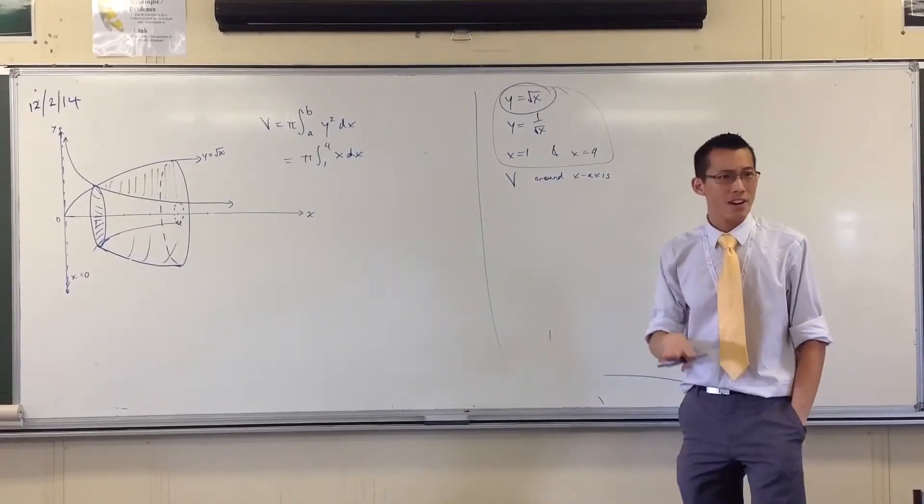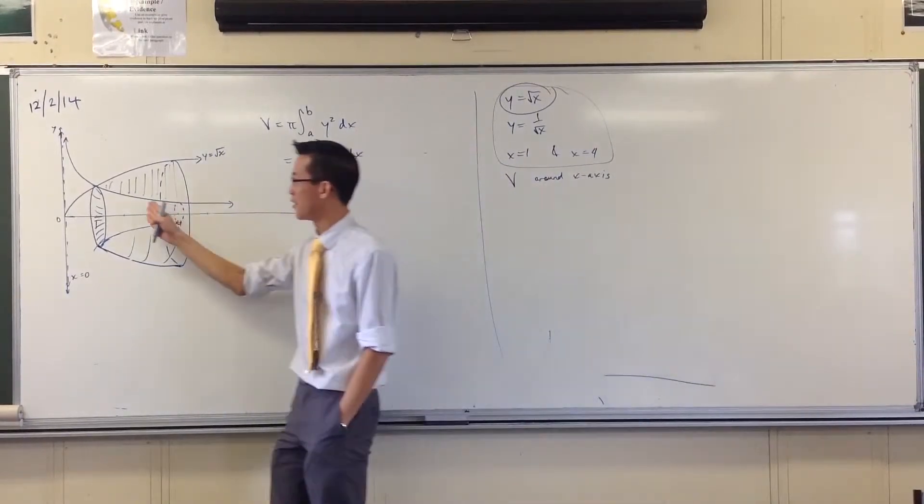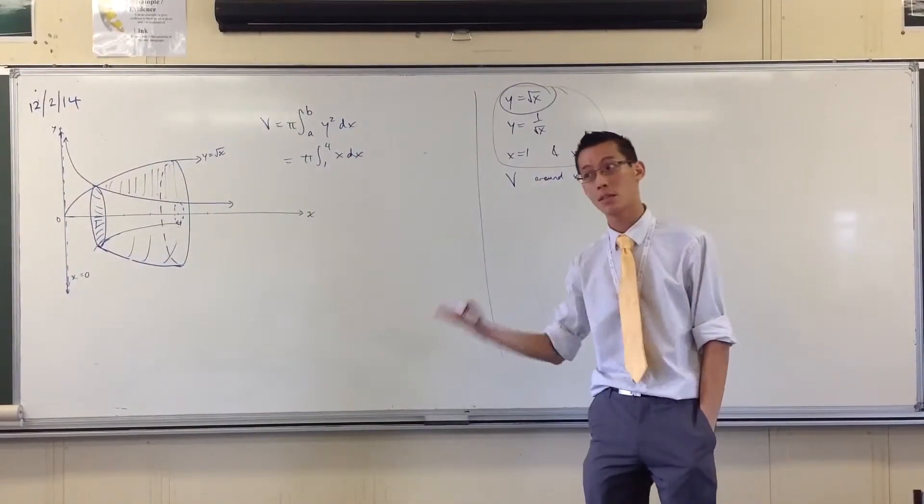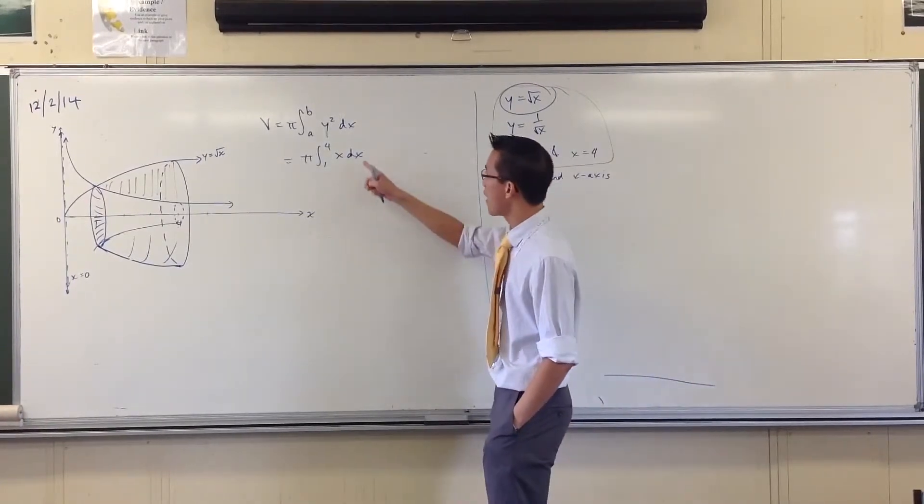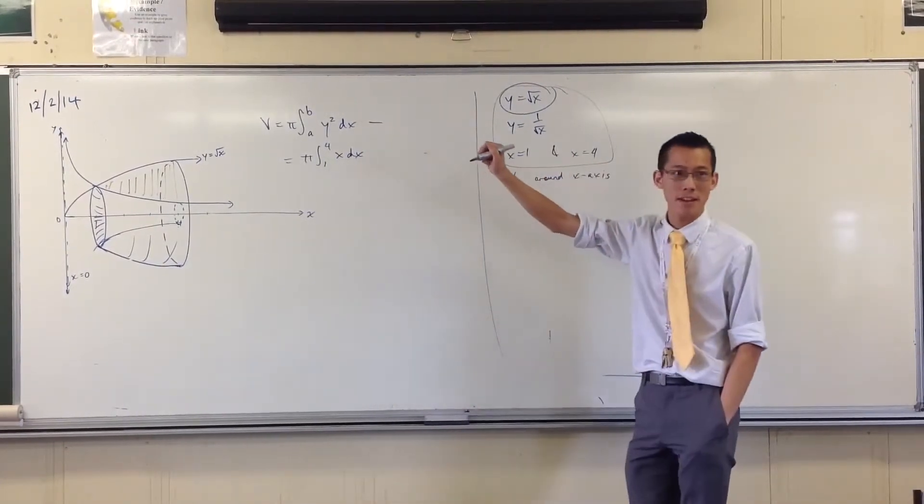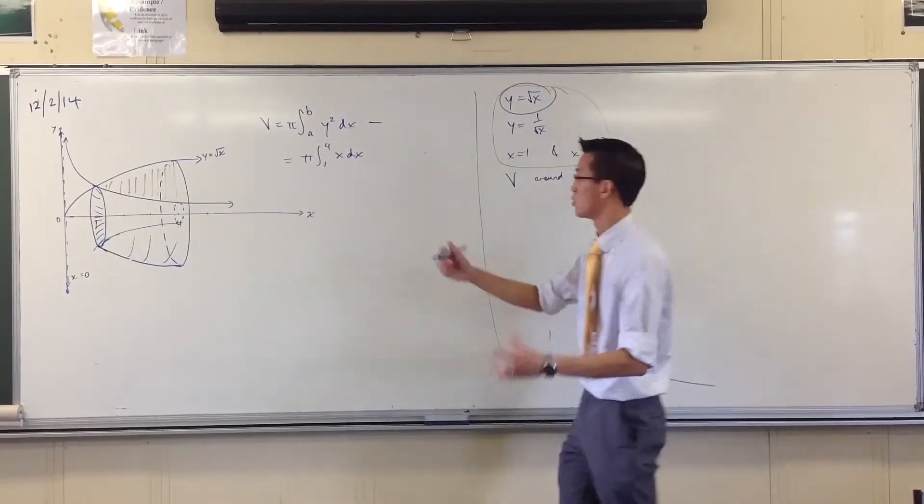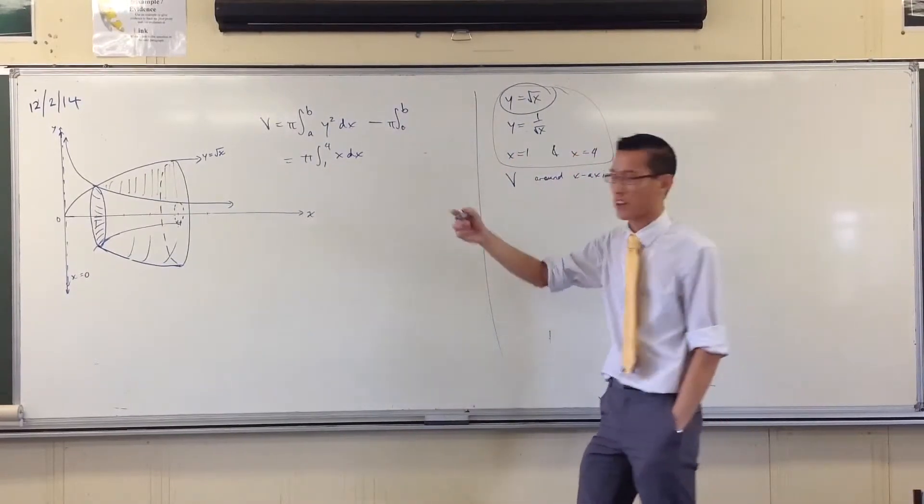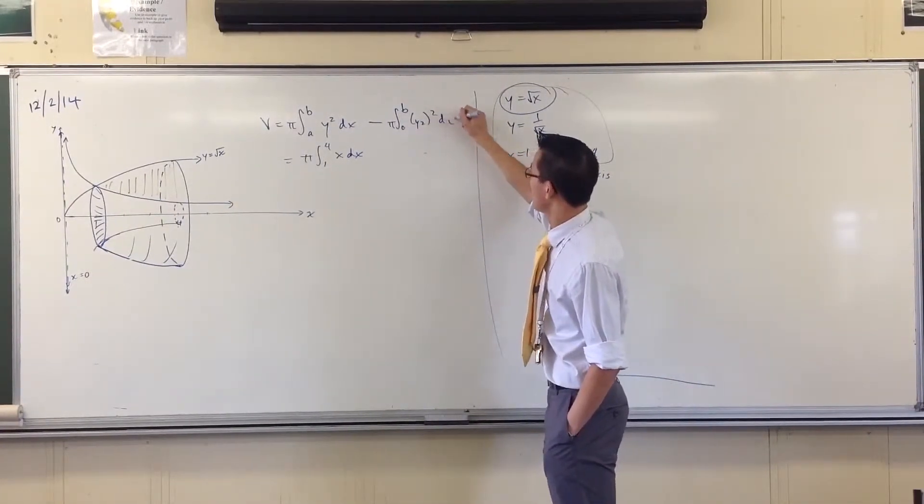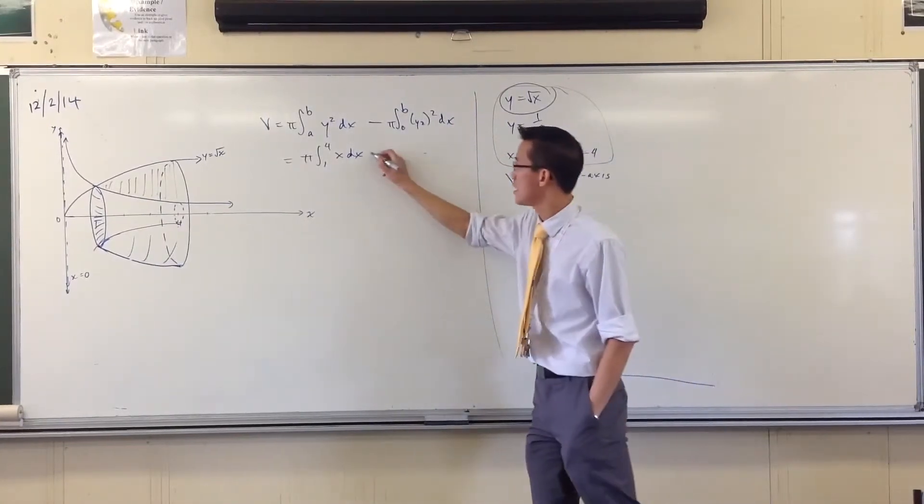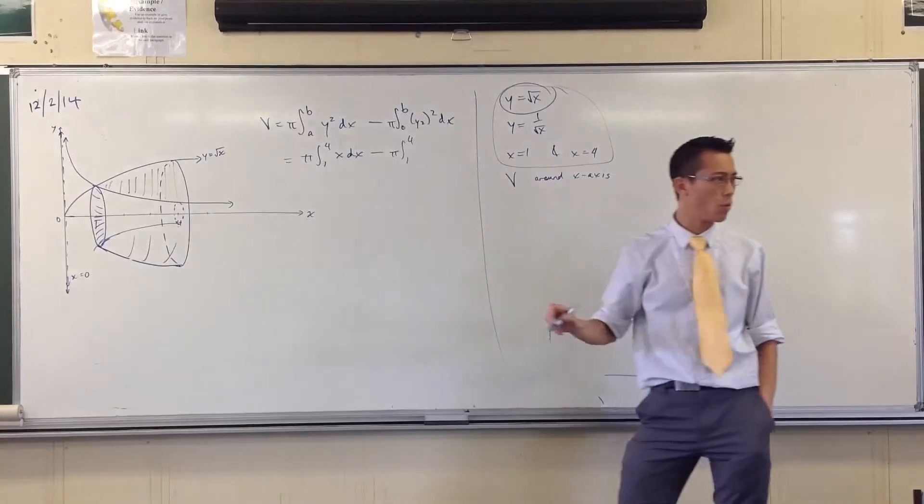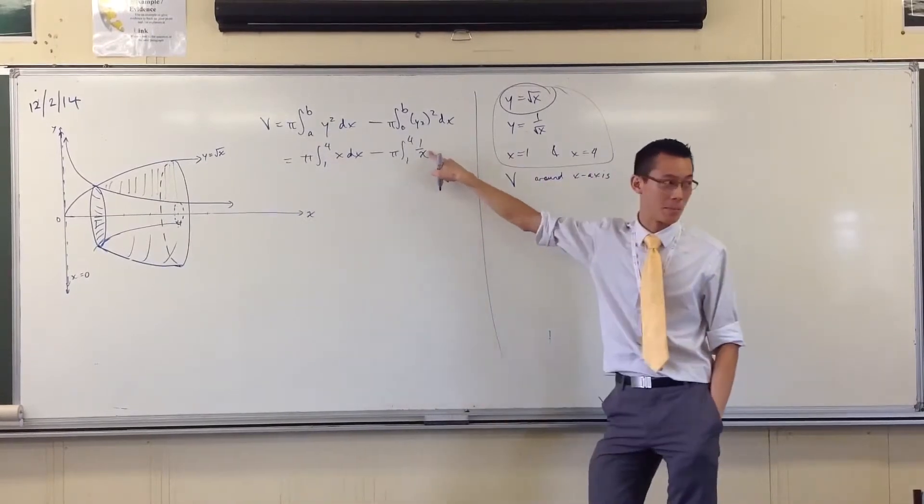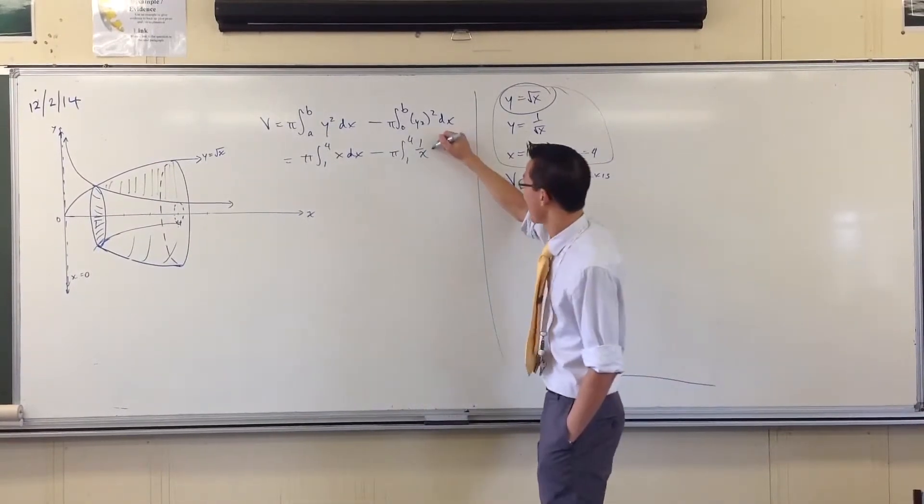Alright, now if I want to get rid of this volume in the middle, all I need to do is calculate that volume and subtract. So in fact I should really have up here the subtraction of another whole volume. So it should look like this: pi a to b, it'd be the other function, I guess I'll call it y2 squared dx. So in this case 1 to 4, what's y2 going to be? It's just 1 over x, which by the way is the sole reason why it appears in this exercise, with respect to x.